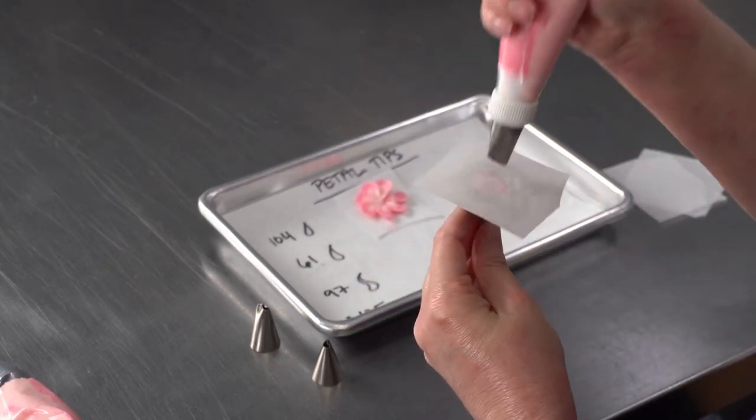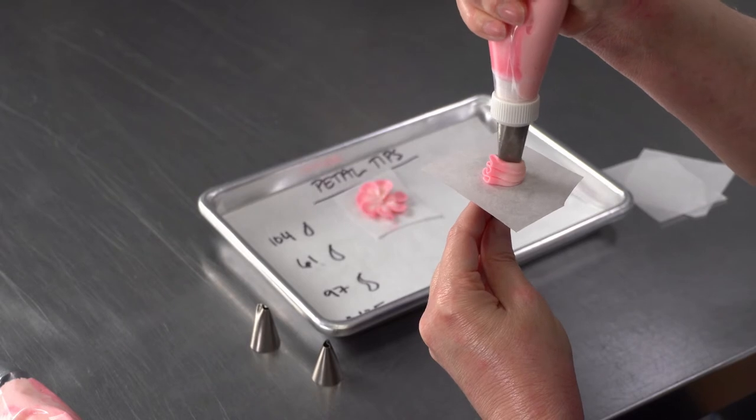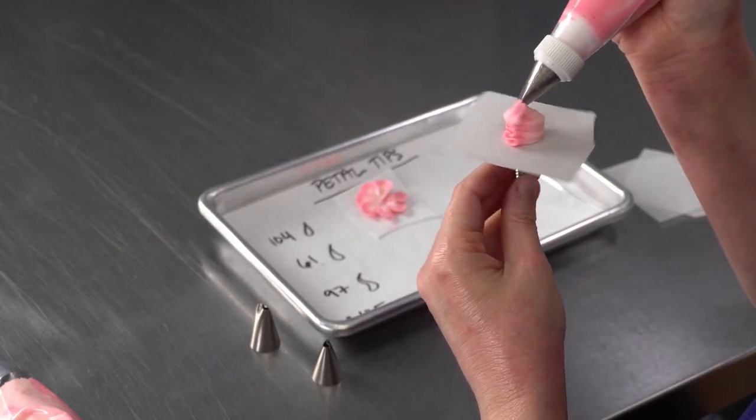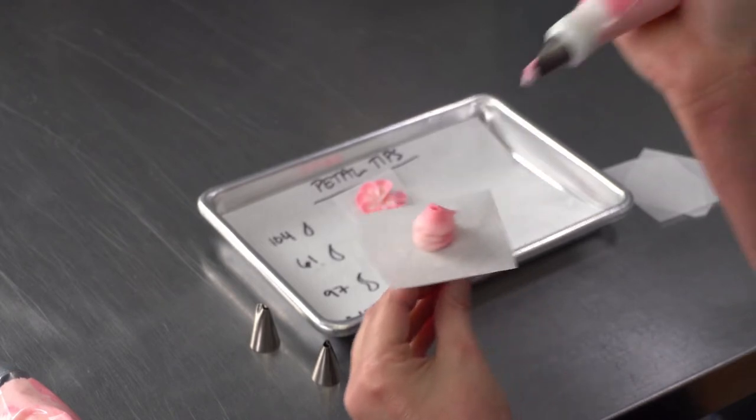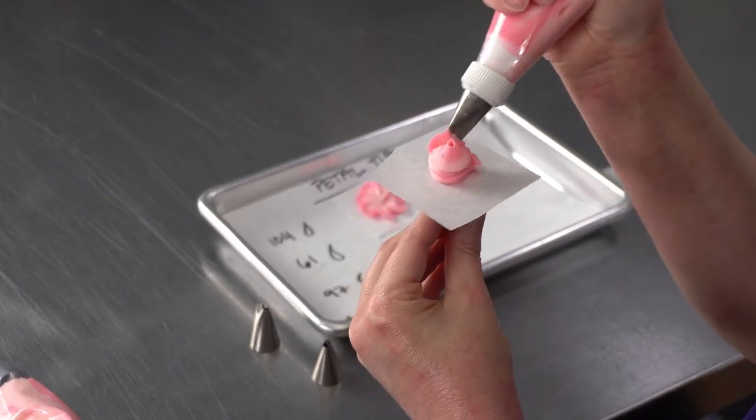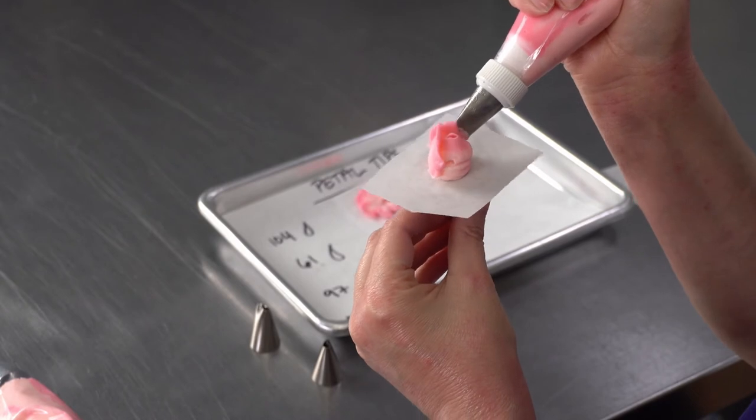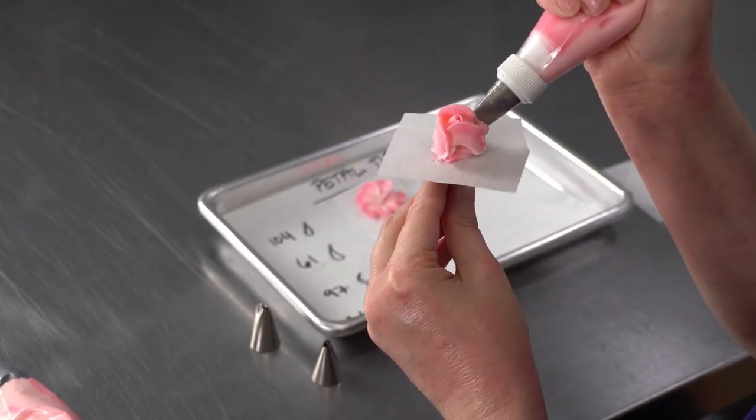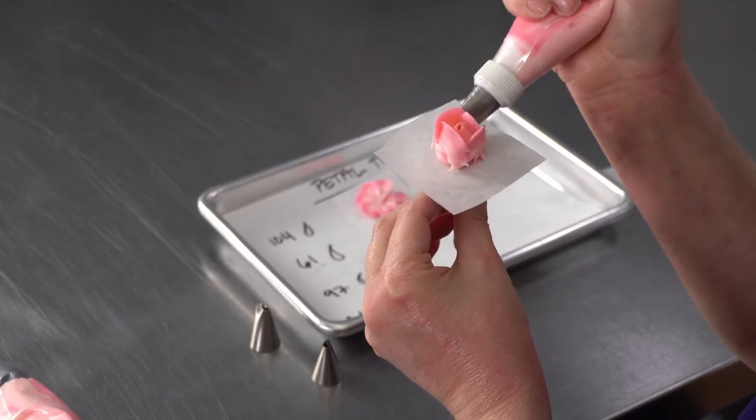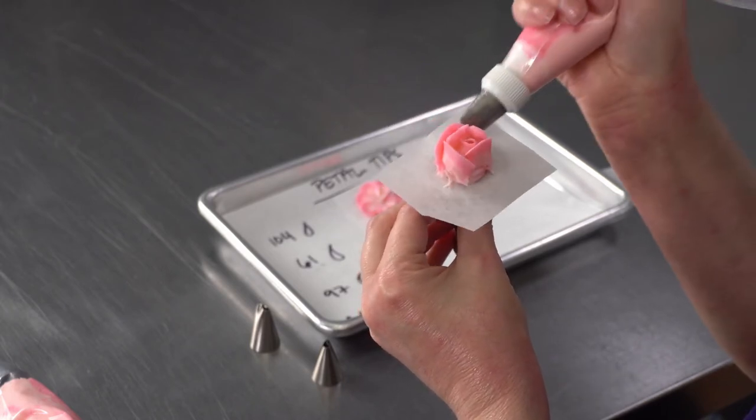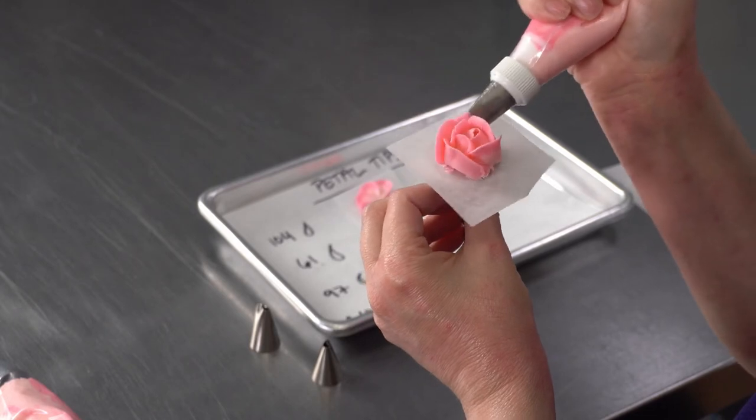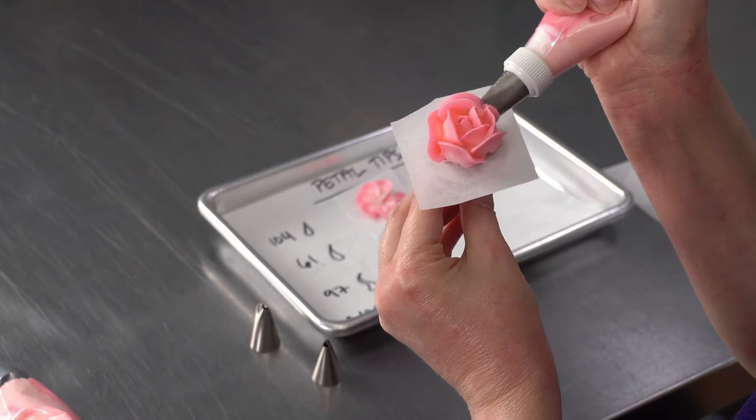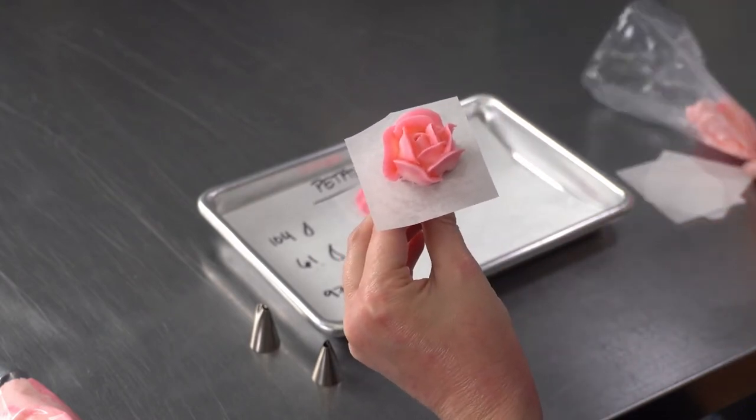Or you can use them to make roses, in which case you're going to pipe a little center and then use your tip to pipe on petals.